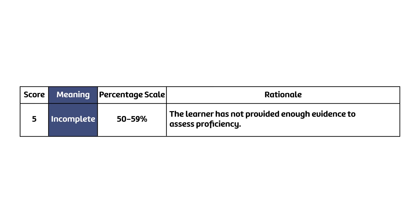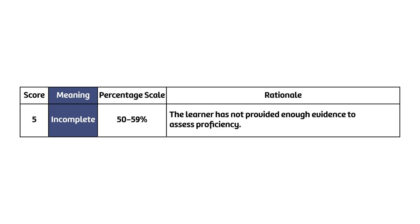How do we know when a student should be in the 50–59 range? For the 50–59 range, the rationale is that the learner has not provided enough evidence to assess proficiency. Students in this range simply have not provided enough work to assess — either they didn't try at all, or they made a minimal attempt. A 55 applies when minimal effort is apparent, and a 50 when no effort is apparent.